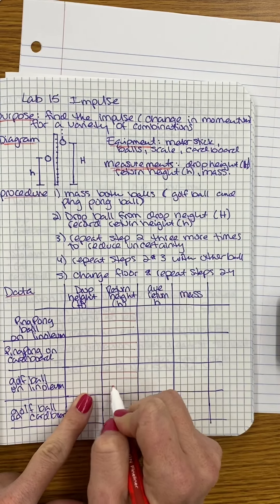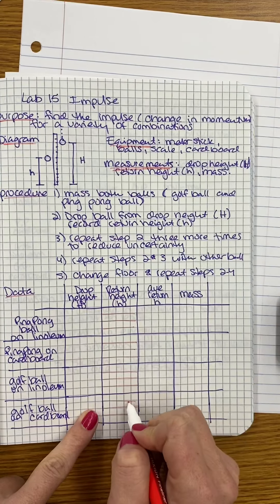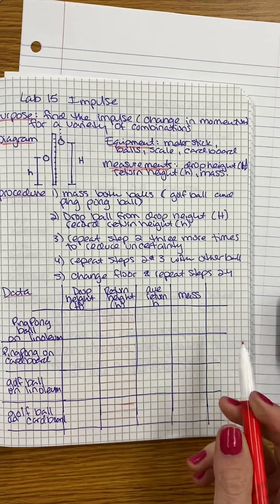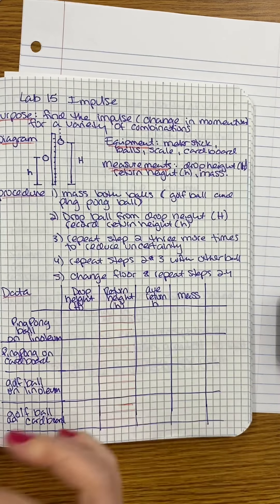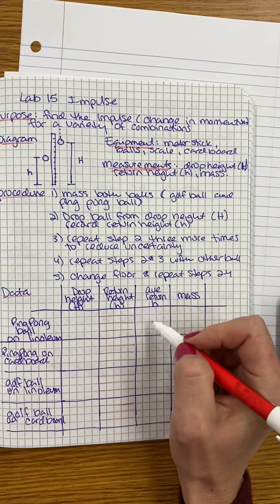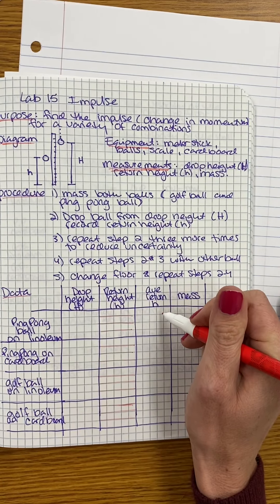Same thing when we do the trials with the golf ball on the linoleum and on the cardboard. So this will just be one drop height. We want to drop it from the same height each time. And this will be our average of our four trials. We'll take four trials and have the average.